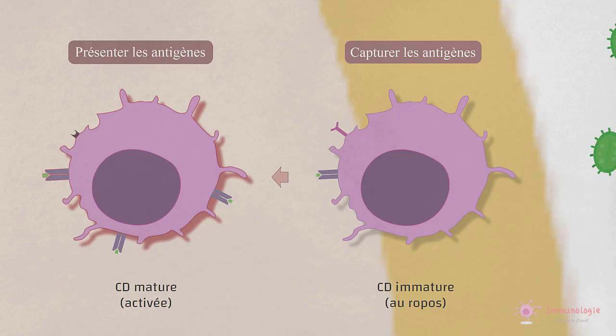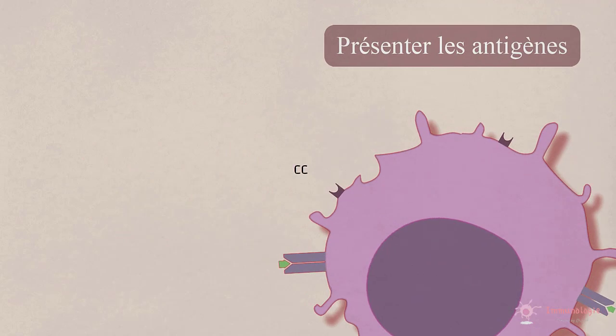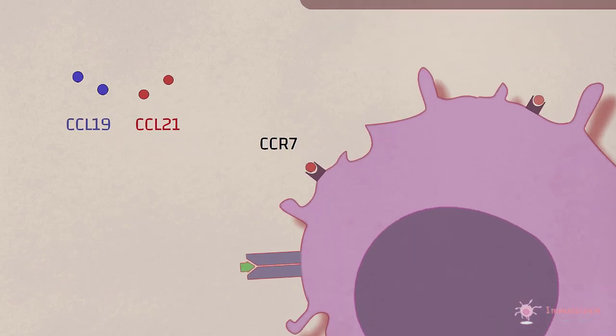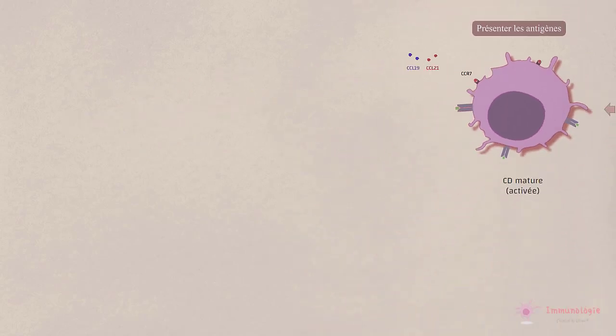De plus, les cellules dendritiques activées ou matures perdent leur adhésivité tissulaire et commencent à exprimer un récepteur appelé CCR7 qui est spécifique de deux chimiokines produites dans les zones T des ganglions lymphatiques. Ces chimiokines attirent les cellules dendritiques nouvellement activées dans les lymphatiques afférents et finalement dans les zones T des ganglions.